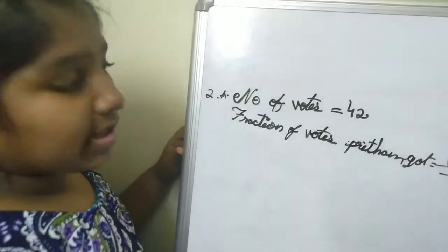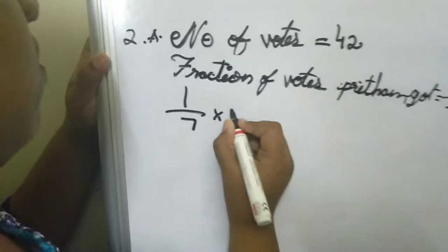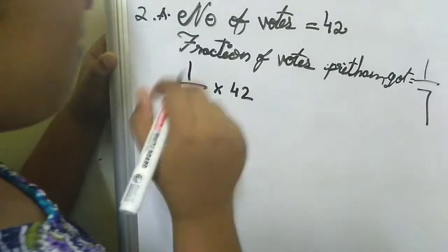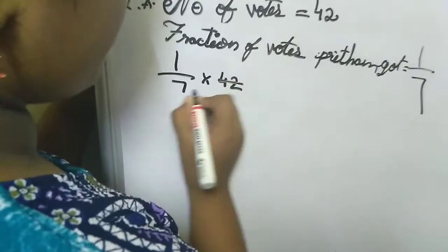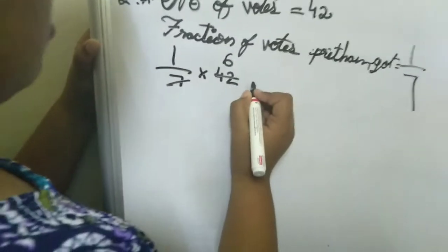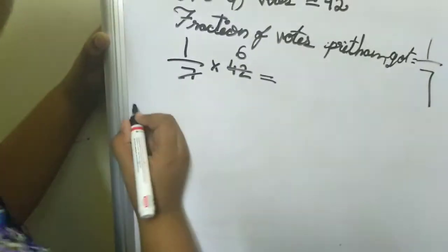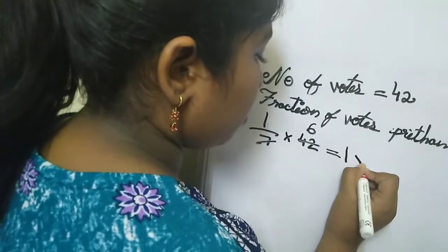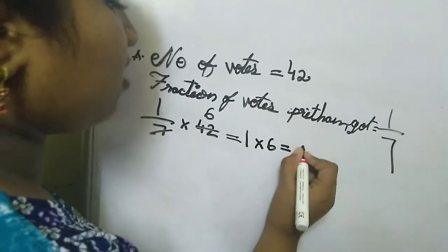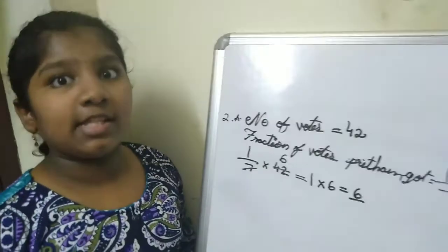Now we will solve this problem. 1 by 7 into 42 equals 1 multiplied by 6 equals 6. So Pritham got only 6 votes.